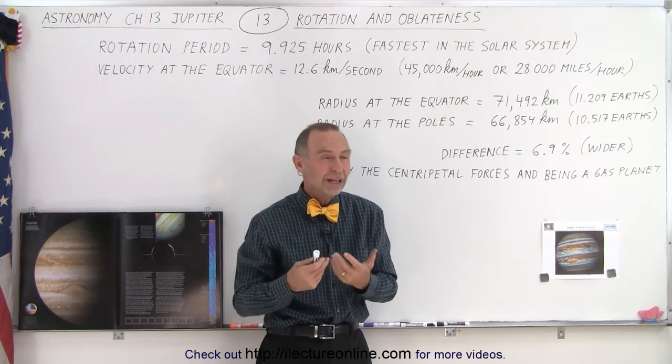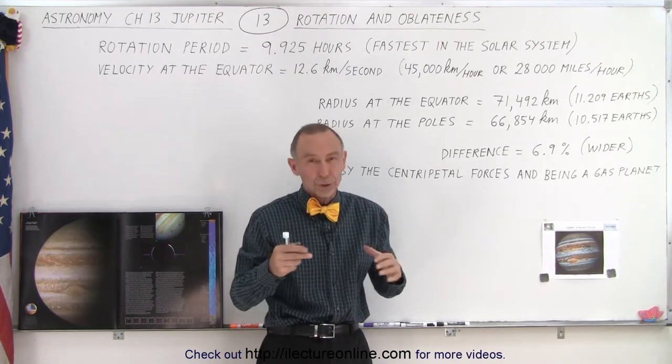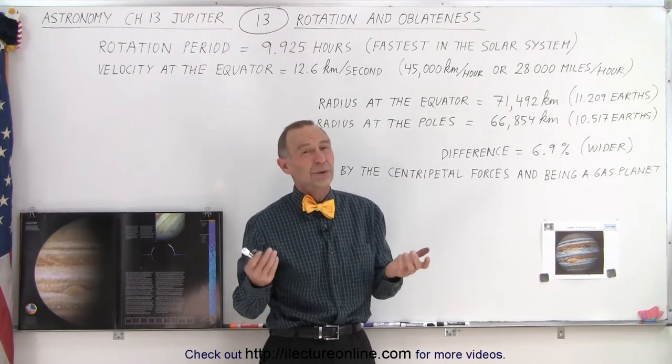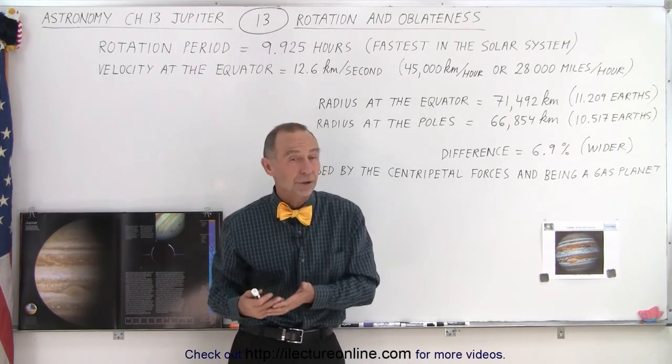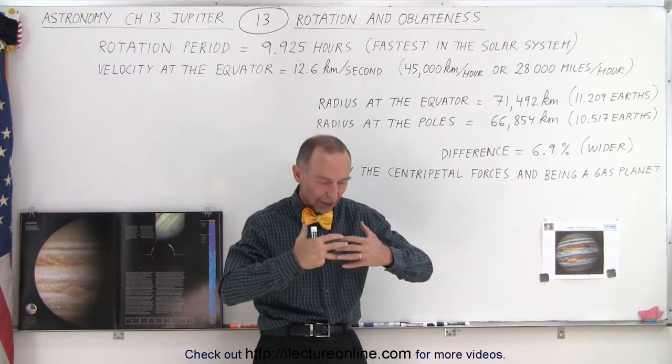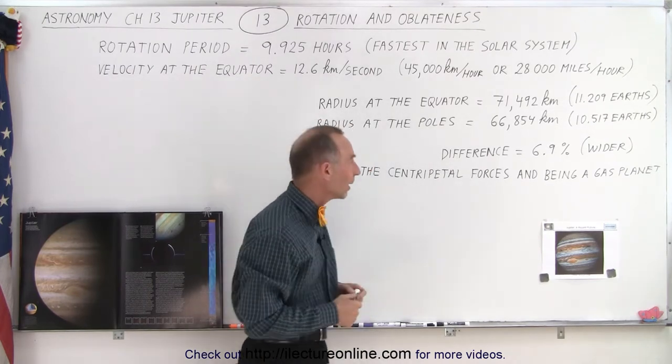Now all planets do experience some sort of bulging. The Earth does bulge a little bit at the equator compared to the poles, but there we're only talking about a few kilometers. Here we're talking about many thousands of kilometers. So yes, you can see that Jupiter bulges out quite a bit.